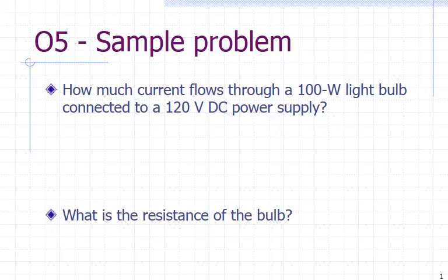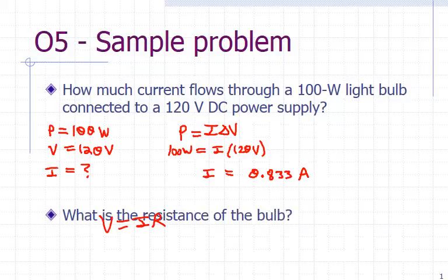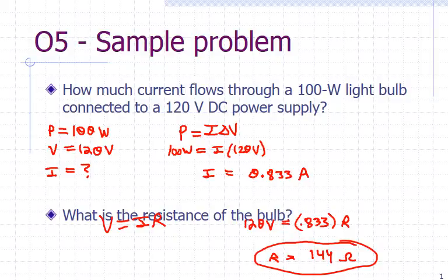For this final one: how much current flows through a 100-watt light bulb connected to a 120-volt DC power supply, and what is the resistance? Use your equation sheet. Pause the clip, and when you're ready to check, hit play. We should get 0.833 amps for the current and 144 ohms for the resistance.